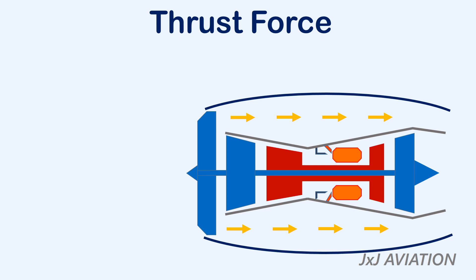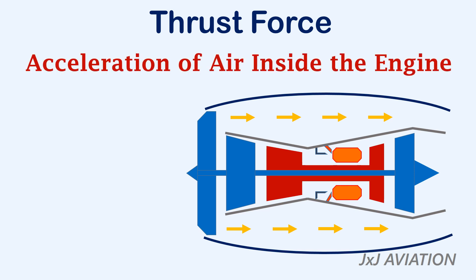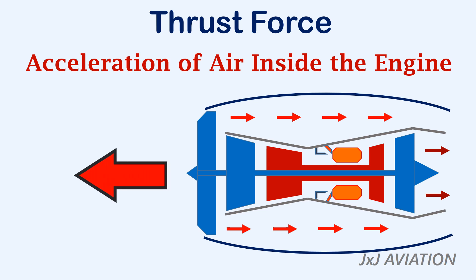The total thrust created by the engine is due to the acceleration of air inside the engine. This acceleration causes an increase in the speed of air coming through the core and the bypass section. Based on Newton's third law, the air pushed out of the exhaust creates a forward push on the engine — this is called the thrust force. The thrust produced is increased or decreased by regulating the fuel flow in the combustion chamber.